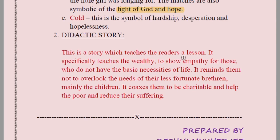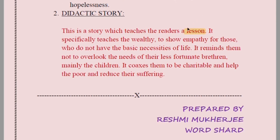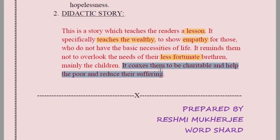This is a didactic story — the story is trying to teach a lesson. The society is apathetic towards suffering; people are happy enjoying their lives and do not want to look or help others. Through these contrasting images, the author is trying to teach the wealthy that they need to be empathetic for the less fortunate. They need to be charitable, help the poor, and reduce suffering. We should always try to help those who are not so privileged.